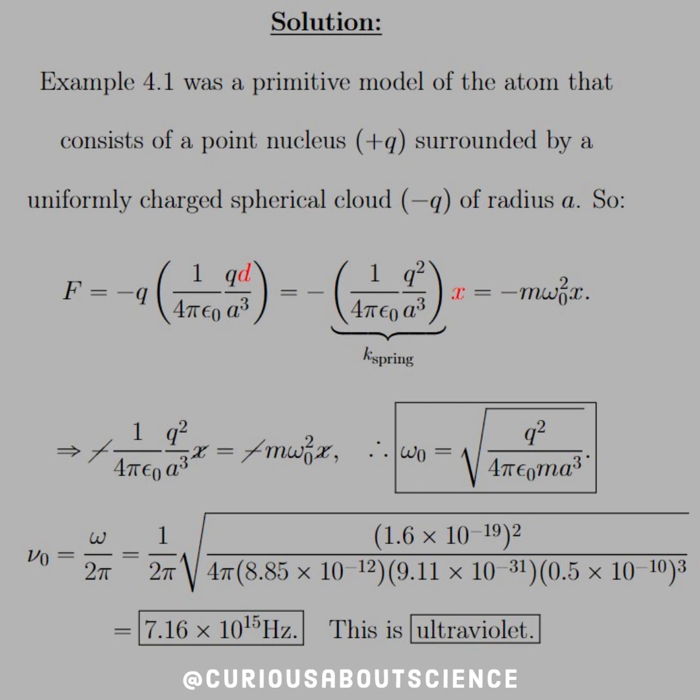Given that the linear frequency is equal to omega over 2 pi, and we see what omega is, we get 1 over 2 pi times the square root, plug in the charge of an electron, plug in epsilon naught, the mass of an electron, and the radius. And what we see here is this gives us 7.16 times 10 to the 15 hertz. And this is in the ultraviolet region.